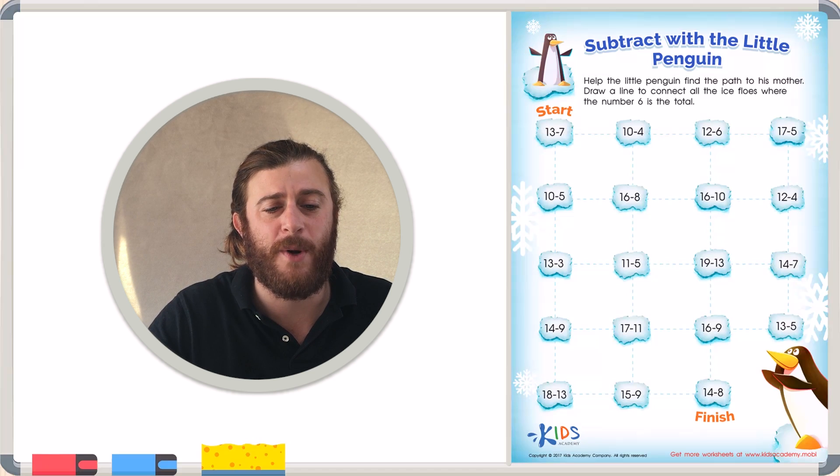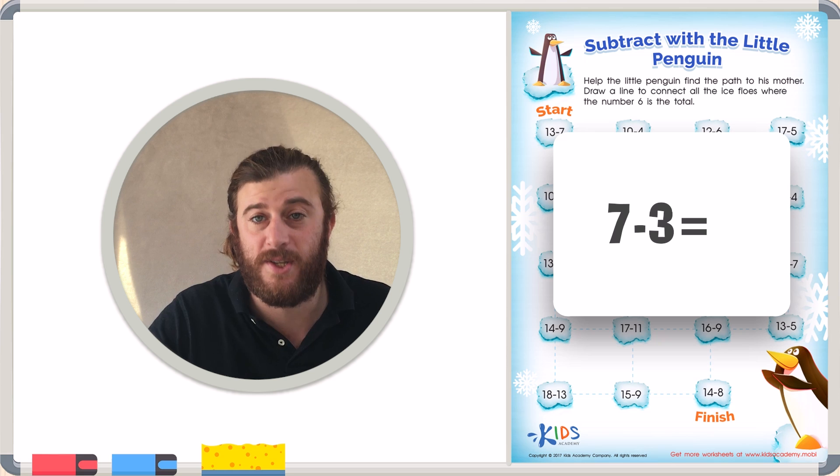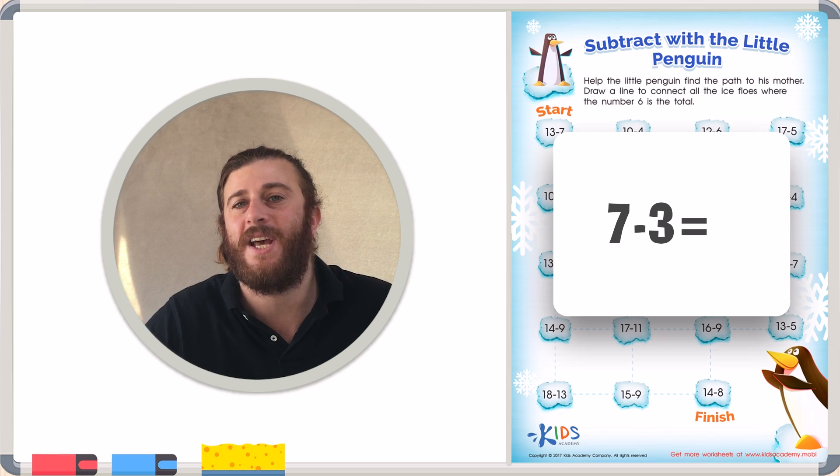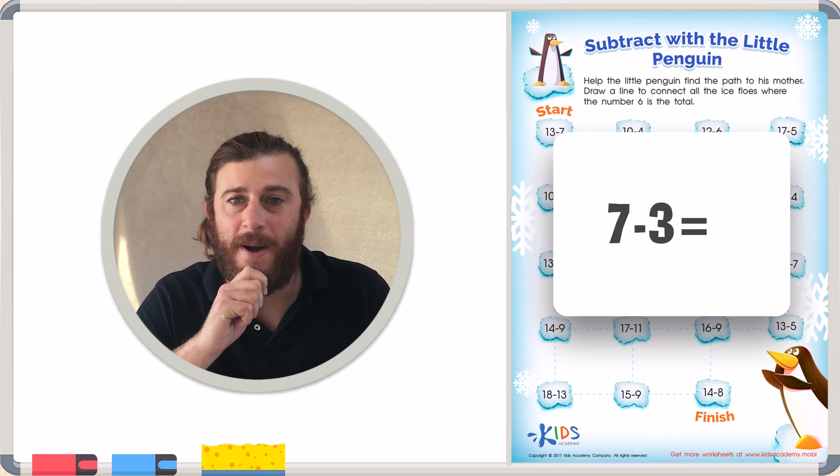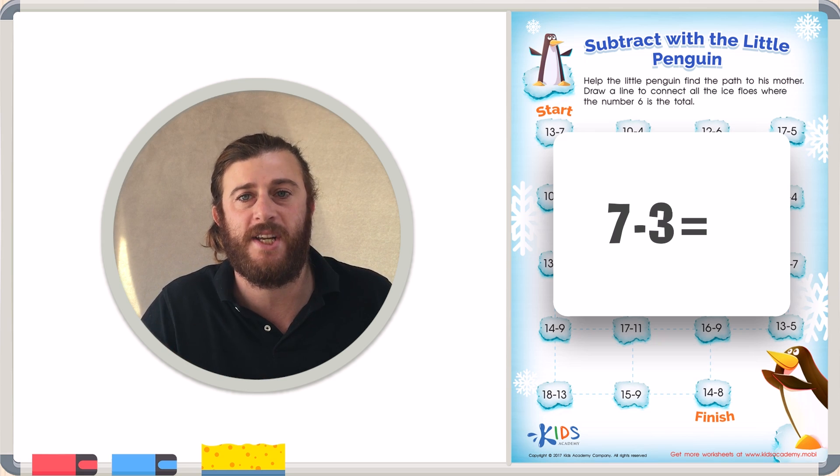For my strategy we're going to be counting backwards. So for a problem like 7 minus 3, we're going to say the number 7 out loud. I like to touch my chin when I say the number to know that I'm not counting it in my subtraction problem. So let's try it together.